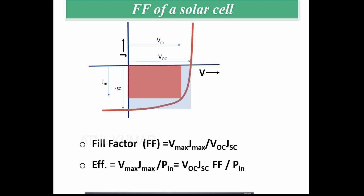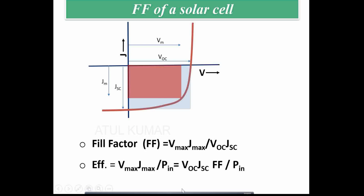The fill factor equation is: VM times JM divided by VOC times JSC. Graphically, this is how we understand fill factor. Now, efficiency is given by VM times JM divided by P_input — the ratio of power output to power input.